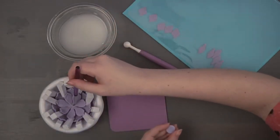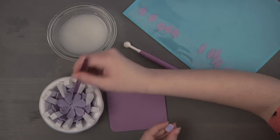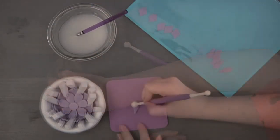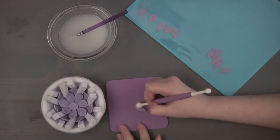Attach your last small gum paste circle in the center. Continue with your 6 size B leaves.